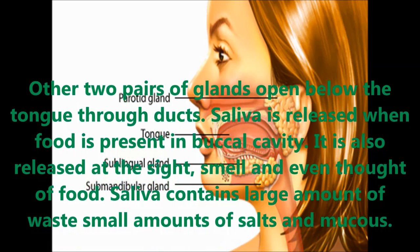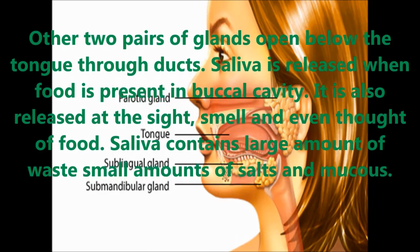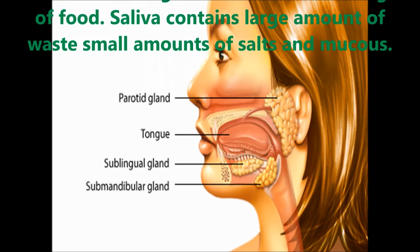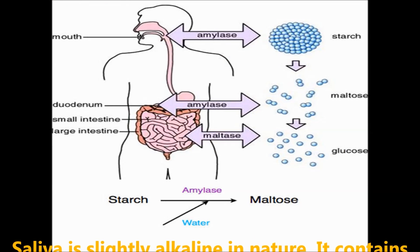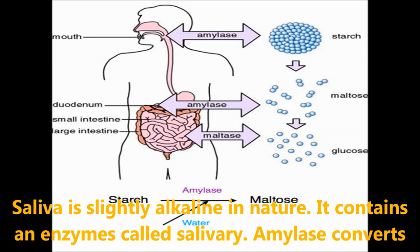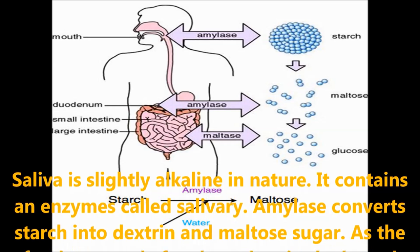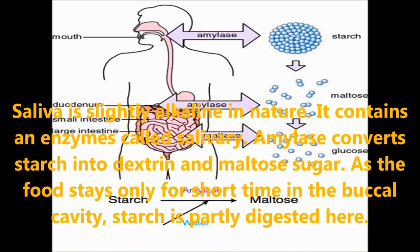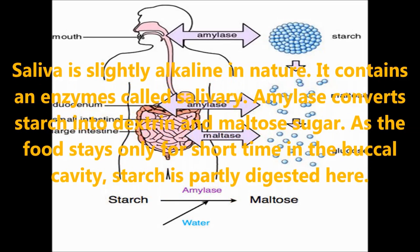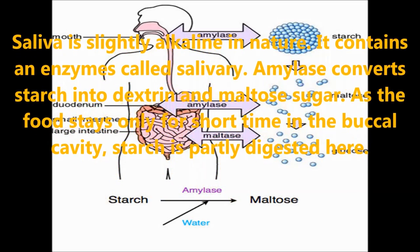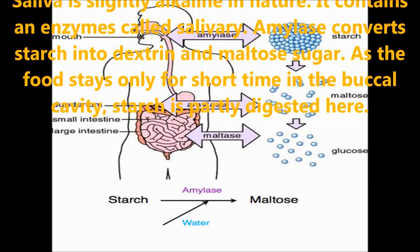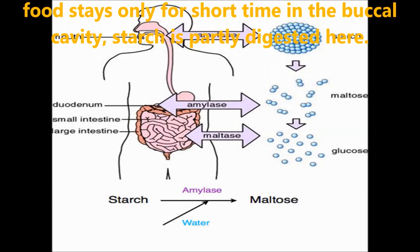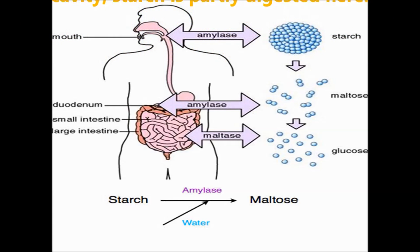Saliva is released when food is present in the buccal cavity. It is also released at the sight and smell of food. This saliva contains a large amount of water and small amounts of salts and mucus. The saliva is slightly alkaline in nature and contains an enzyme called salivary amylase. This salivary amylase converts starch into dextrins and maltose sugars. After the food stays for a short time in the buccal cavity, the starch is partially digested here.